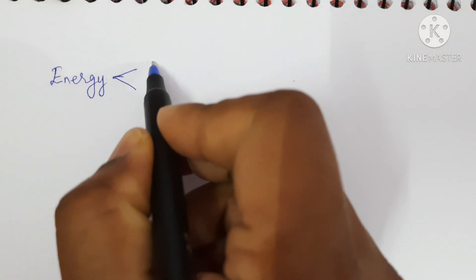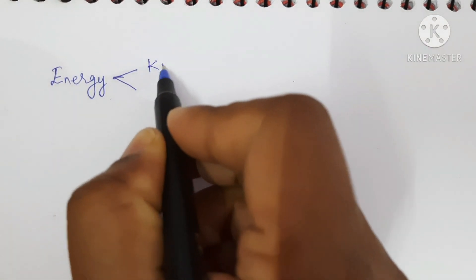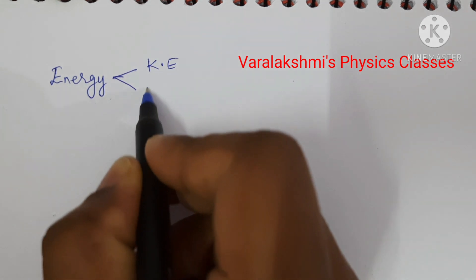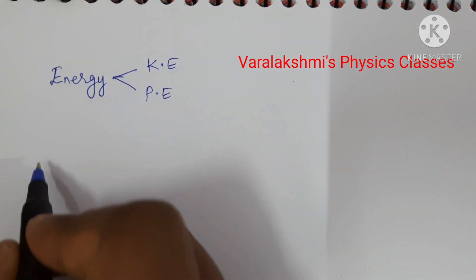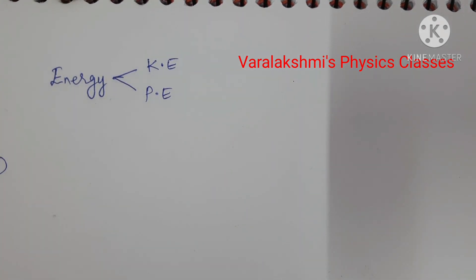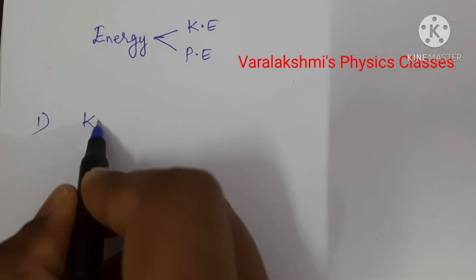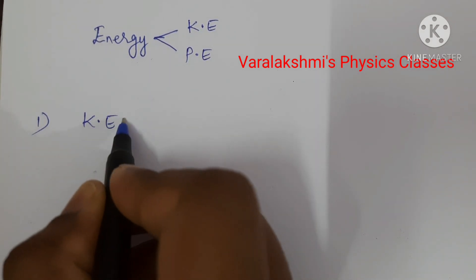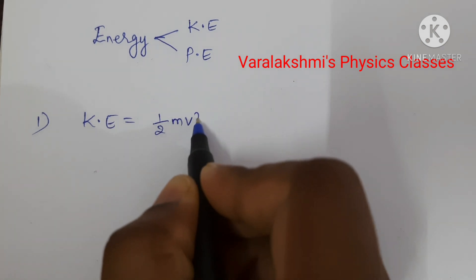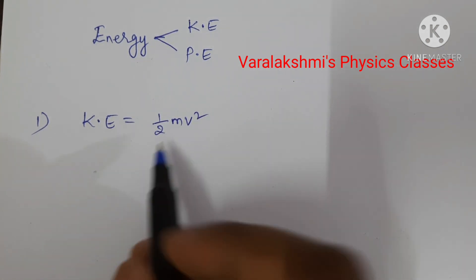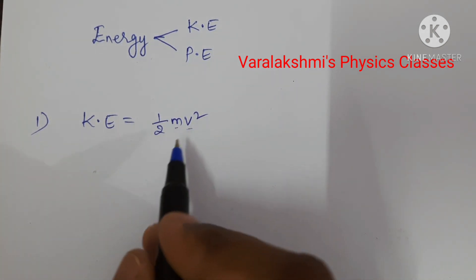Energy is of two types: kinetic energy and potential energy. Let us write the dimensional formula for kinetic energy. Kinetic energy is equal to the formula half mv squared, where m is the mass and v is the velocity.